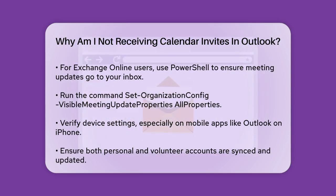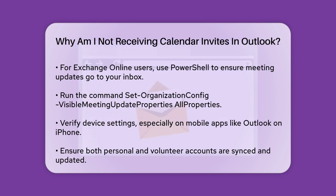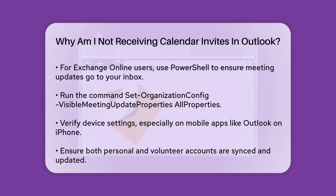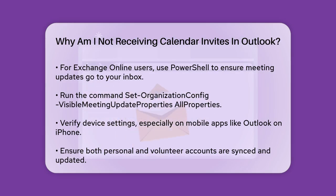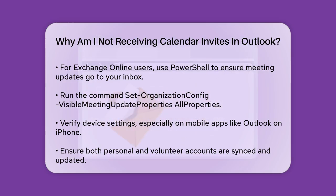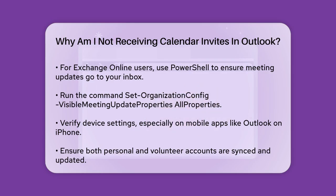For users on Exchange Online, you can use PowerShell to ensure meeting update messages go to your inbox. Connect to Exchange Online PowerShell and run the command Set-OrganizationConfig with the parameter VisibleMeetingUpdateProperties set to AllProperties. This will make sure you receive email notifications for any updates to your calendar invites.